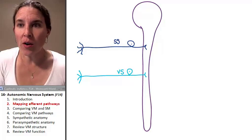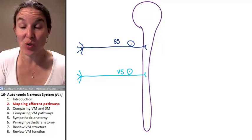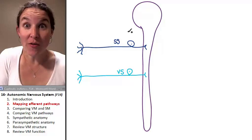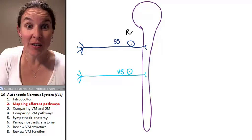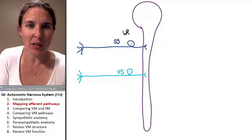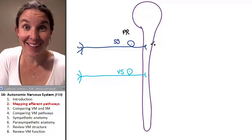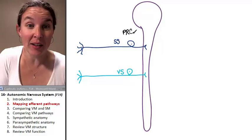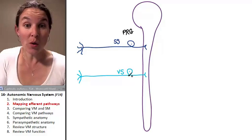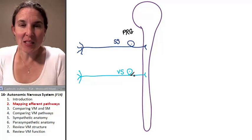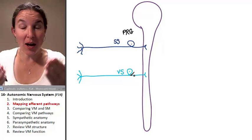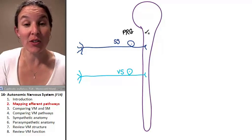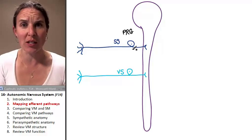Where are these cell bodies? You know the answer to this. All of these cell bodies are found in the posterior, oops, that's not a P. There's the P. Posterior root ganglion.